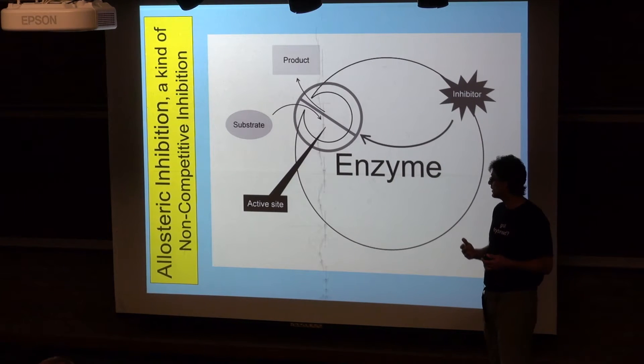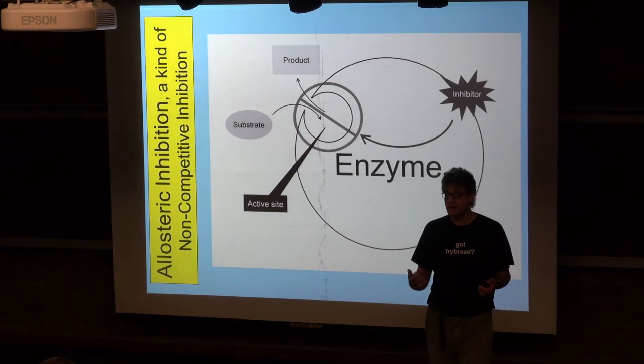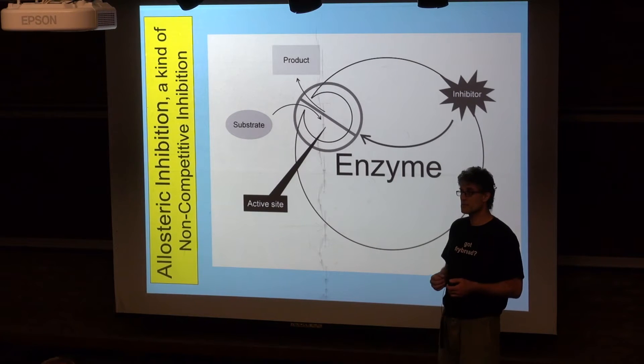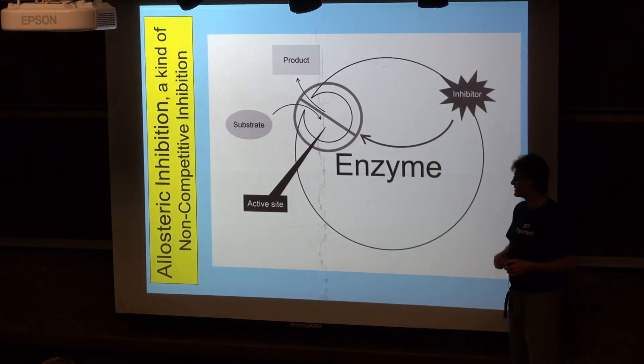Within the body, the control of enzyme functioning often occurs in a non-competitive manner. And this is something known as allosteric inhibition.